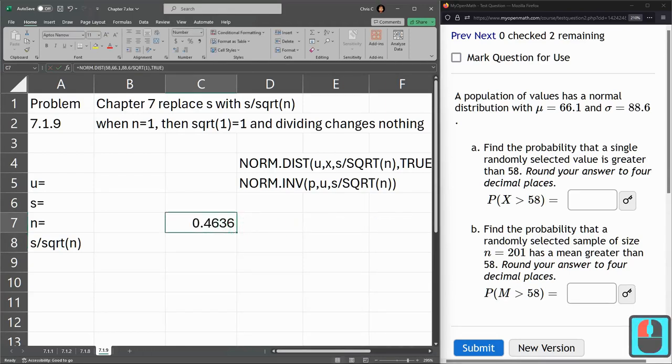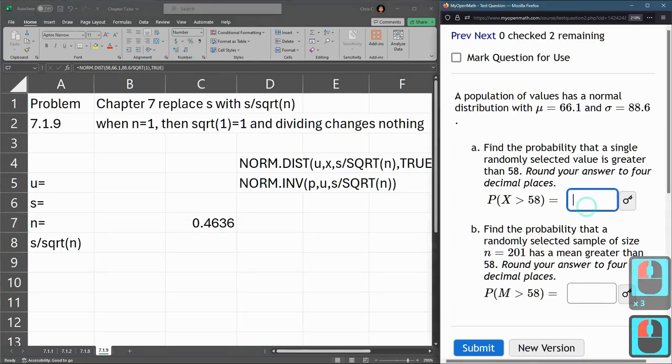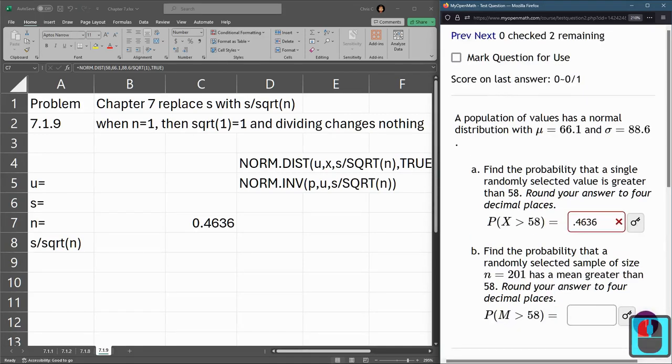Right here. This is 0.4636. I think this was already truncated or rounded. 4636. Submit that. Excellent.